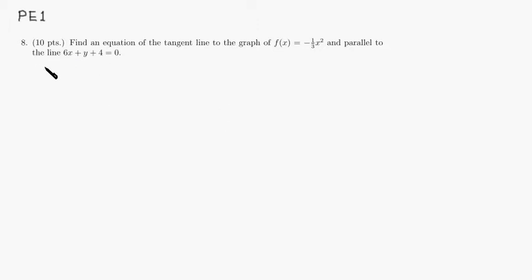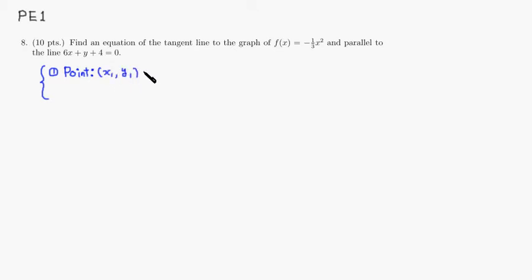If you're looking for the equation of the tangent line, you need two things: first, we need to find the point — let's call it (x₁, y₁) — and second, we need to have its slope, which we'll call m.